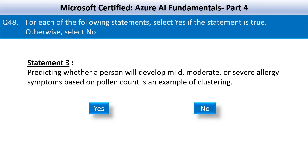The third statement is: predicting whether a person will develop mild, moderate, or severe allergy symptoms based on pollen count is an example of clustering. This is an incorrect statement. This is an example of classification, not clustering. Classification involves predicting a discrete label based on input features — this is a supervised learning problem where the output is a predefined category.